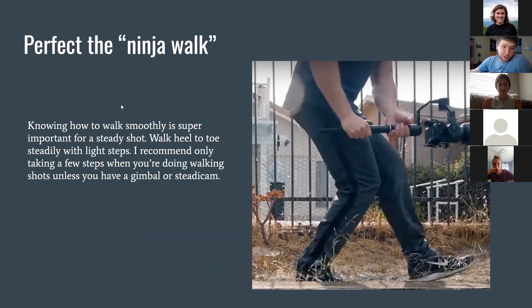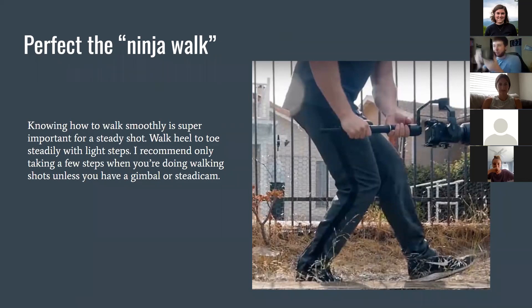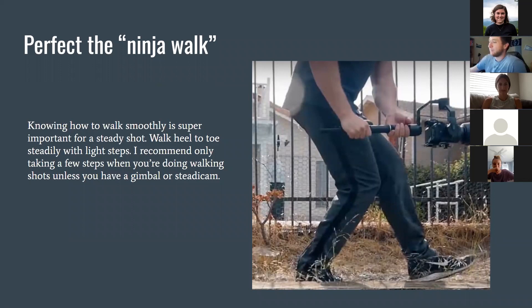Perfect the ninja walk: knowing how to walk smoothly — walking on the balls of your feet, heel to the ball of your foot — is really important. A lot of people just walk normally when holding the camera and the shots look super shaky, bouncing up and down. Learning how to walk is one of the physical parts of filmmaking. These physical techniques will drastically improve your shots and make them look way more professional.